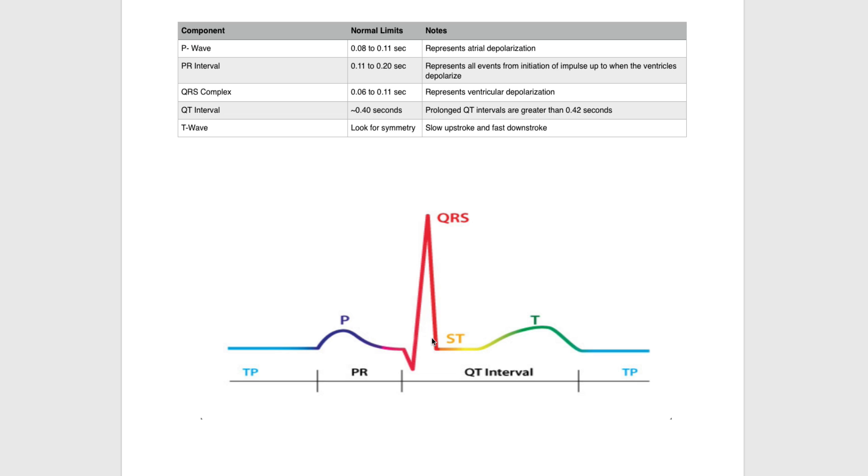Next is the QT interval. The QT interval has a normal limit of roughly 0.40 seconds. A prolonged QT interval is when the QT interval is greater than 0.42 seconds, or just greater than two large boxes on your ECG paper.